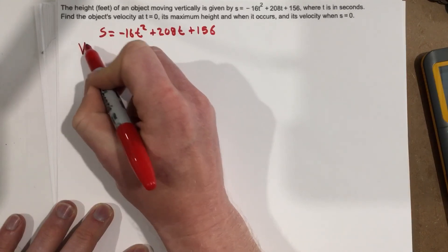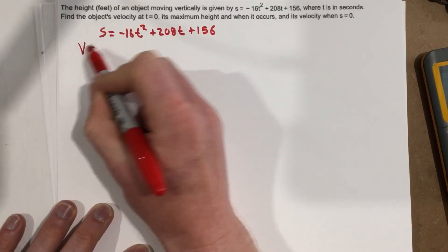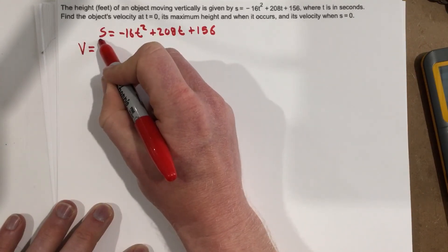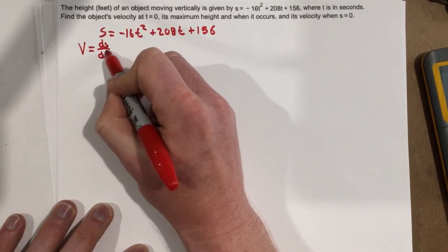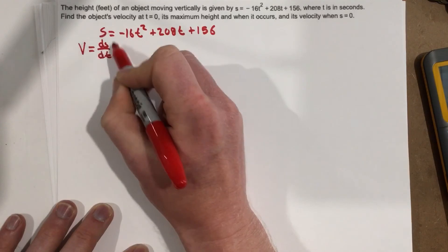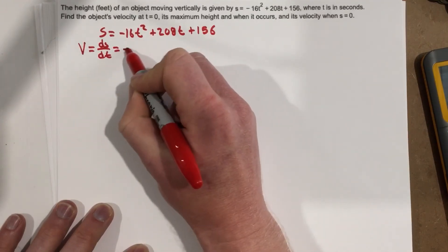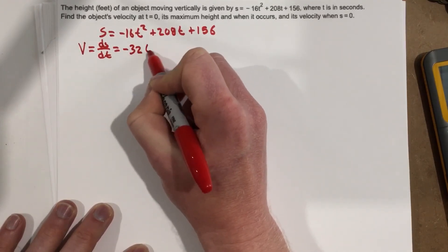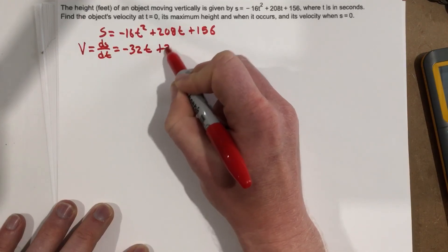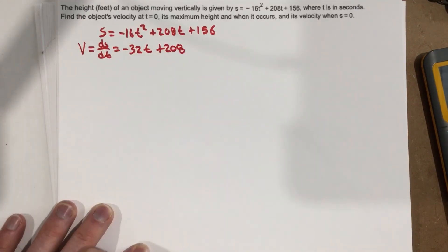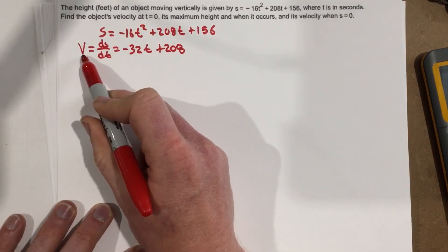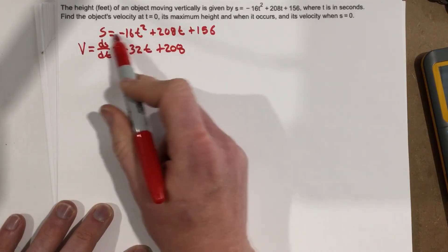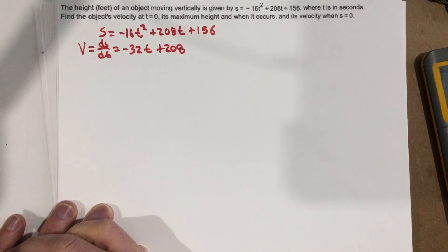I know if I take the derivative of this function, I get a velocity, and that is going to be written as ds over dt, right? Derivative of the s function with respect to t, and that would equal negative 32t plus 208. So this is the equation for the velocity, and that's just simply the derivative of our height or our displacement.